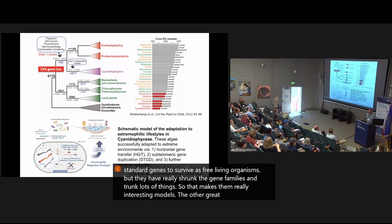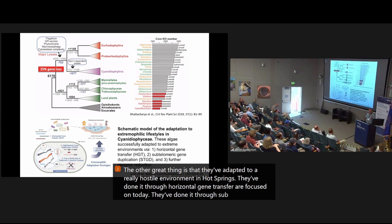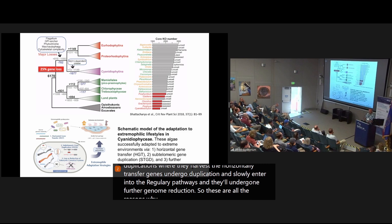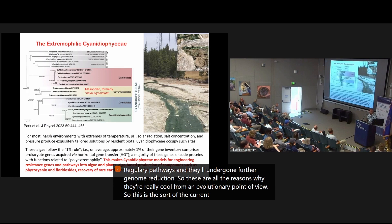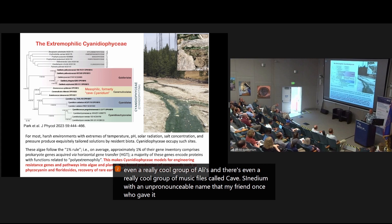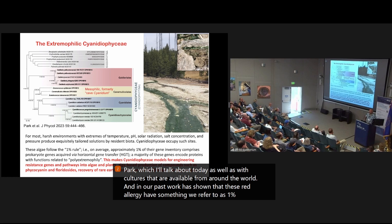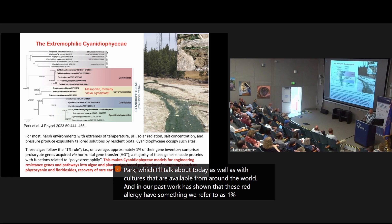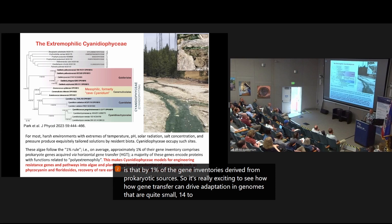The other great thing is that they've adapted to a really hostile environment in hot springs. They've done it through horizontal gene transfer I'll focus on today. They've done it through subtelomeric gene duplications, where they harvest the horizontally transferred genes, which undergo duplication, and slowly enter into the regulatory pathways, and they've undergone further genome reduction. So these are all the reasons why they're really cool from an evolutionary point of view. So this is the current extremophilic cyanidioficea tree of life with the Galdieria clade. And there's even a really cool group of mesophiles called Cave Cyanidium, with an unpronounceable name that my friend Juan Luo gave it, as well as the cyanidium and the cyanidioschizon lineage.